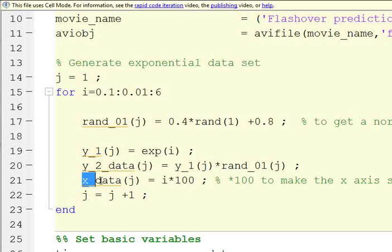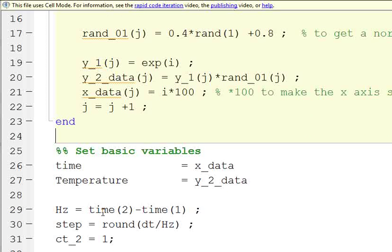And then we say our data x is i times a hundred, just to make it bigger than this 0.1. We're just going to manipulate the axis a little bit and then move our counter up a little bit. So it's just a standard loop to generate some data to extrapolate.